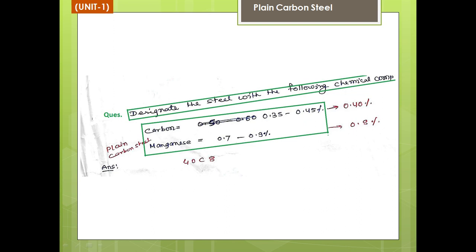Now you are able to designate plain carbon steel. The rule is simple because in plain carbon steel only manganese is present as a constituent other than carbon. So the figure 8 represents the percentage of manganese and 40 represents the percentage of carbon.